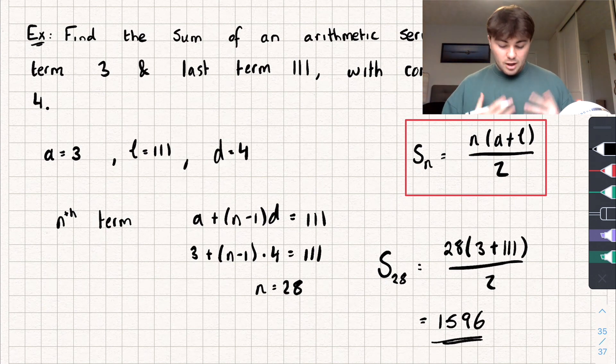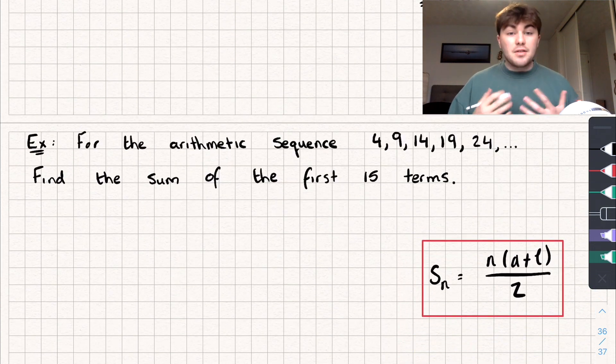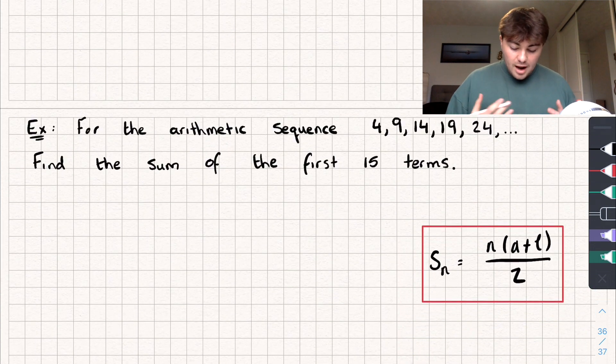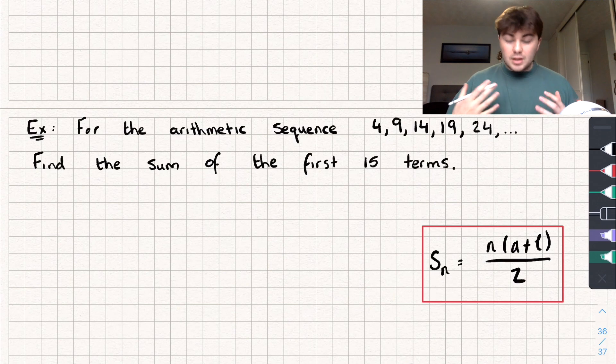Hopefully that made sense, I feel like I did a lot of talking then. So let's look at this last example, and I'll bring the formula for the nth term down. And it says, for the arithmetic sequence 4, 9, 14, 19, 24, so it's linear, find the sum of the first 15 terms.